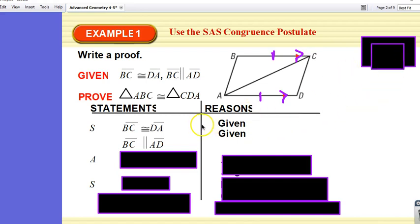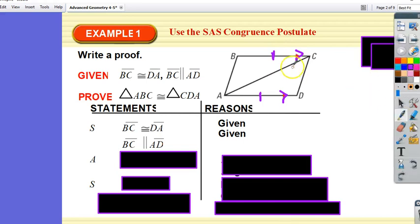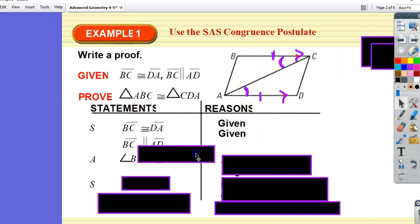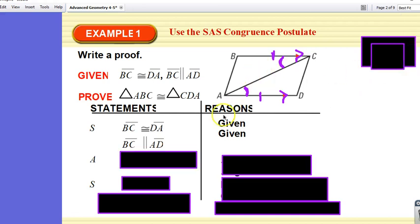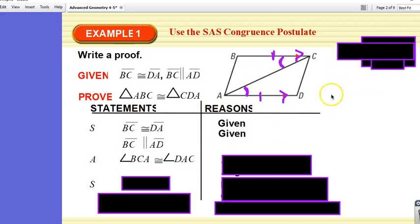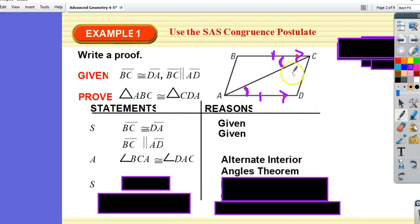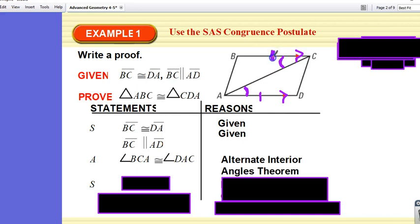Alright, so those are our statements, and our reasons are they were given. So based on the fact that they're parallel, what does that tell us? That tells us that this angle in here and this angle in here are congruent, alternate interior angles, right?